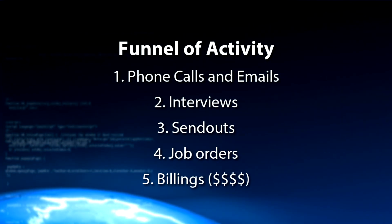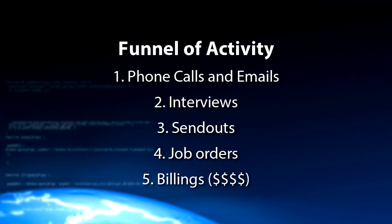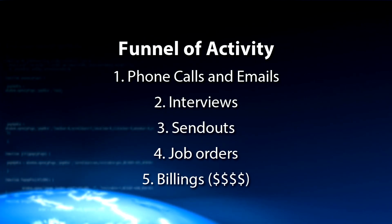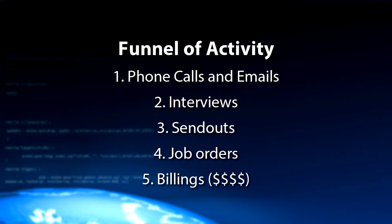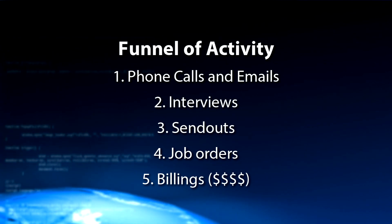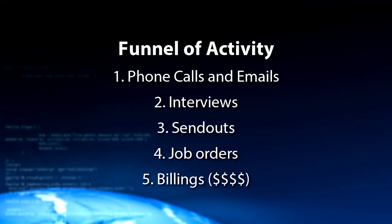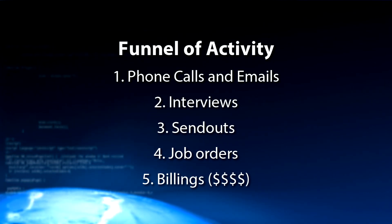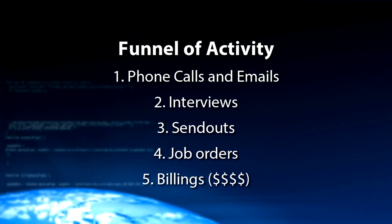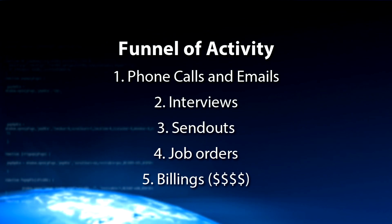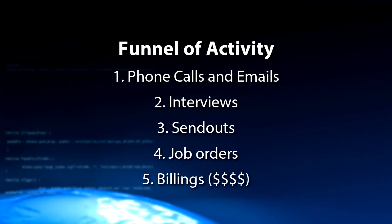From top to bottom, we start with phone calls and emails, which hopefully result in bringing people in for interviews, which hopefully convert into send-outs that put you on job orders and ultimately result in billings — money. So there's only five things. This is a perm desk example, but staffing can be broken down pretty simply as well. There are only five things we really even care about. I also look at the activities as variable activities — the green ones — and non-variable activities, black.